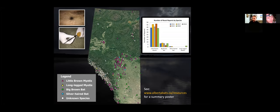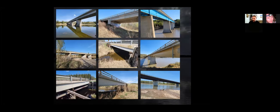Most of the bats reported using anthropogenic structures are Little Brown Myotis, primarily in buildings — possibly biased by the fact that Little Brown Myotis tends to form large colonies that are easily noticed. But buildings are not the only anthropogenic structure on the landscape. There are also bridges, and those bridges have not received a lot of attention as far as their use by bats, especially in Alberta and Saskatchewan.